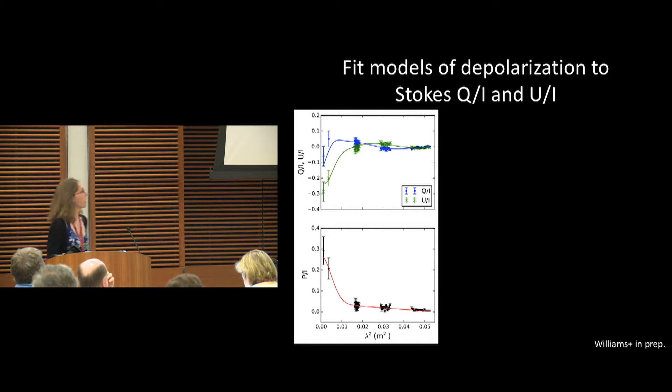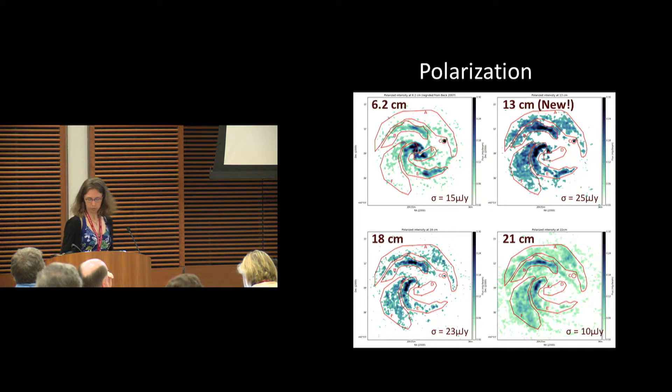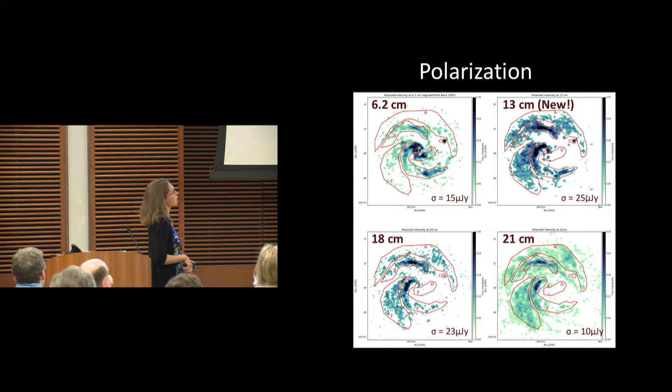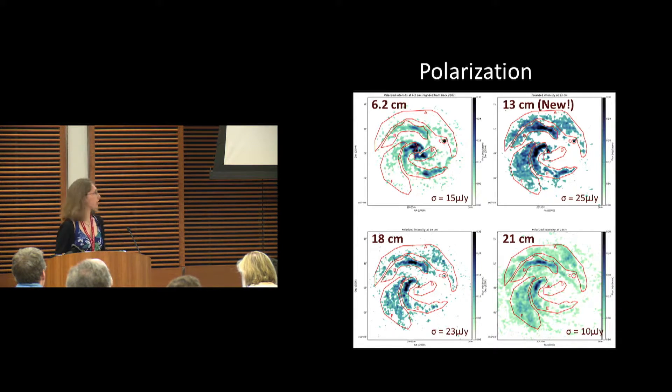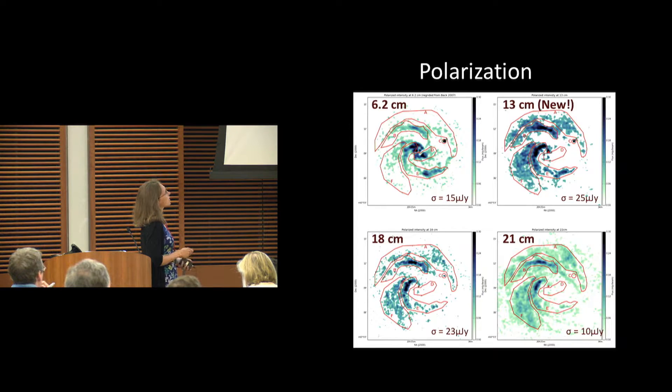Where I came in was using new 13-centimeter polarization observations. There are some interesting things that we can see. We start to recover this spiral arm that is observed at the shorter wavelengths that disappears at the longer wavelengths here.